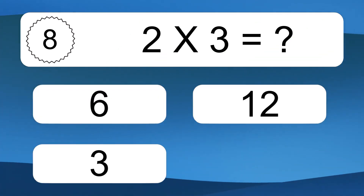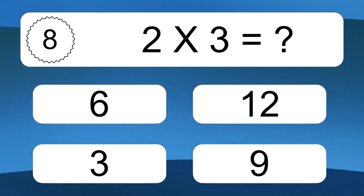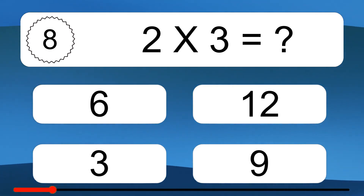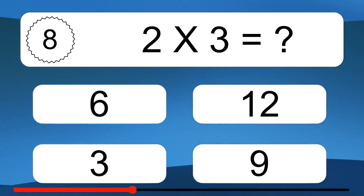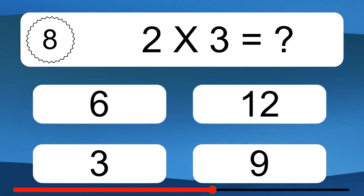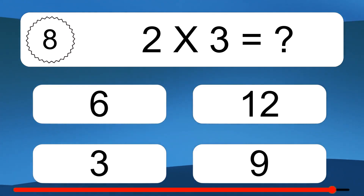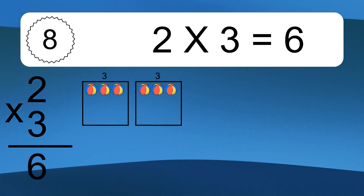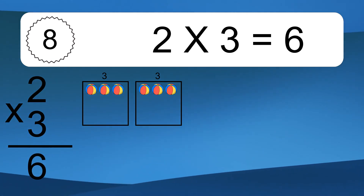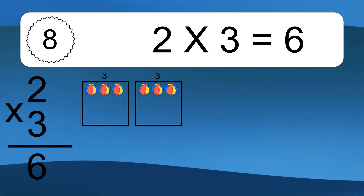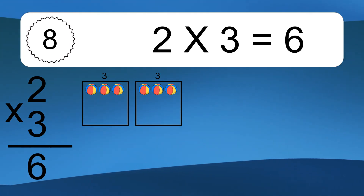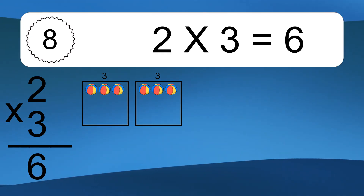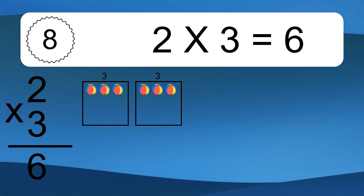2 times 3 equals what? 2 times 3 equals 6. We have 2 boxes, and each box has 3 colorful balls inside. If you count all the balls in all the boxes together, you will have 2 times 3 balls. This equals 6 balls.